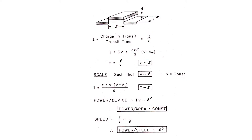This is a slide I showed at that 1968 workshop, and it's a very simple slide. It says the charge in transit is whatever charge you put on the gate to turn the transistor on. And the current is that charge divided by the transit time. The transit time is just the length — how far it has to go — divided by the velocity.